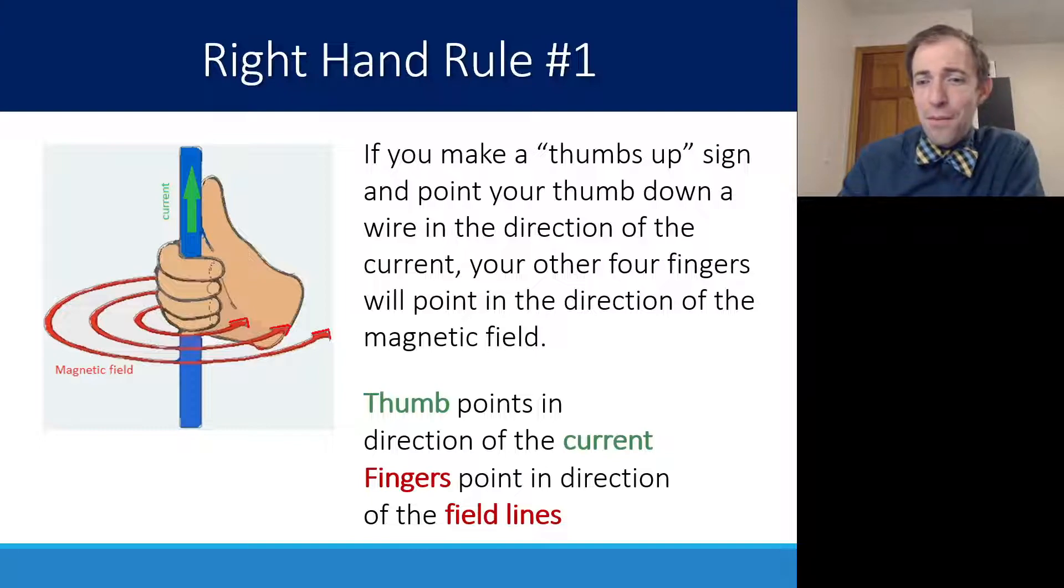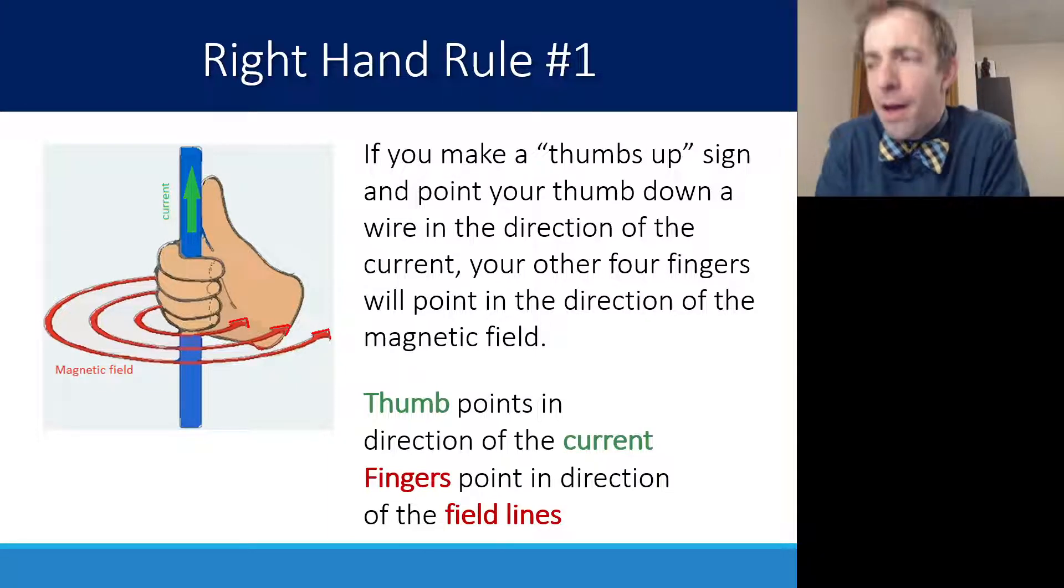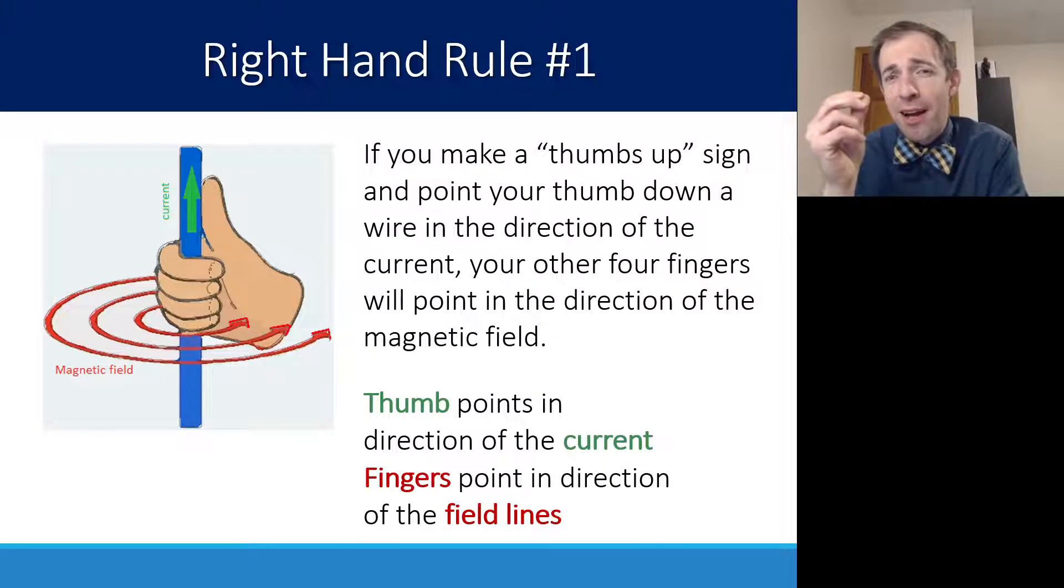The last part that we need to really focus on here is how all of this ties in to something called the right-hand rule. Something that we're going to get into a lot, especially later on in this unit, is that if you have a current-carrying wire, so you send a current through a wire, you can actually create a magnetic field around that wire. You can create a little magnet using electricity. And this is a pretty awesome power.